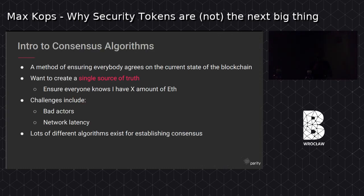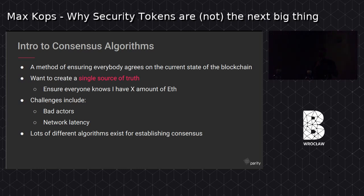So a consensus algorithm — what is it? In blockchain, it's really important that everybody agrees on the state of the network. A consensus algorithm is just a way for us to agree that everything is as it should be. For example, if I have 10 Ether but Bob thinks I have five, then there's obviously a problem. A consensus algorithm will help everybody come to agreement on the state of the network.